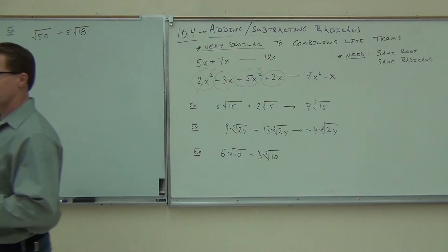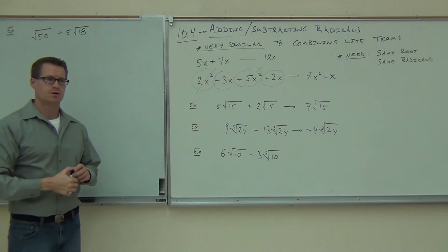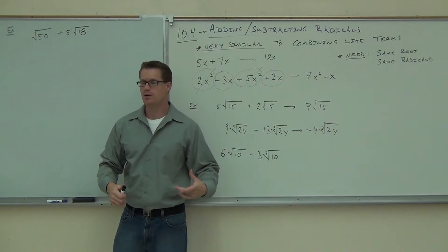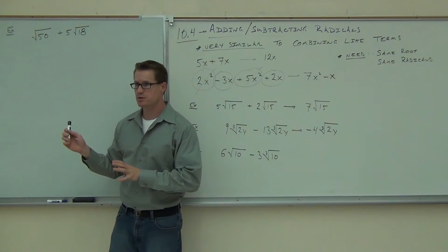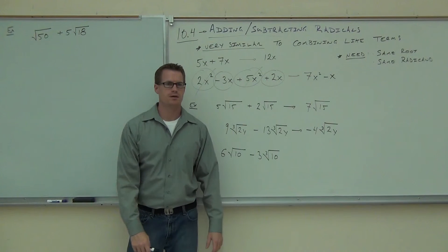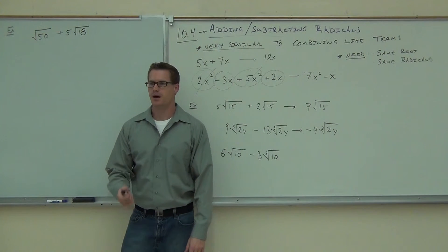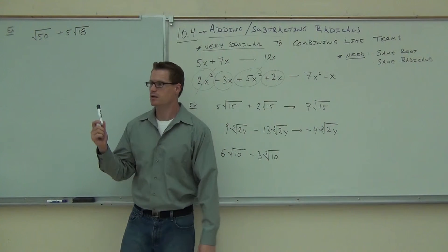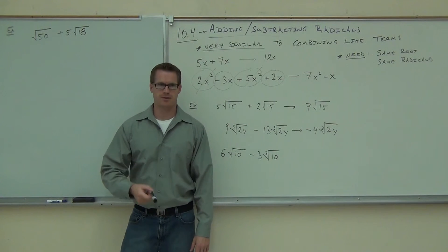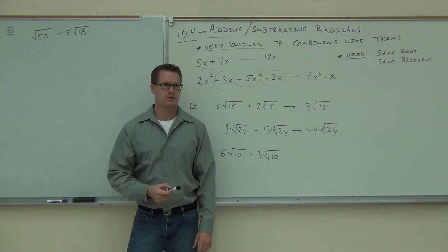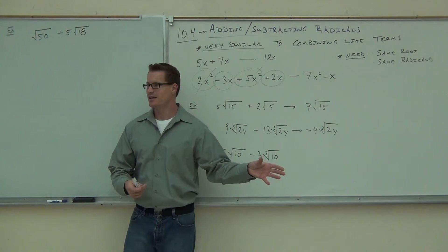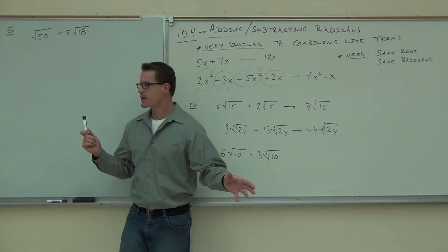Let's look at that one. Do I have the same type of root? Yes. Do we have the same radicand? No. Am I going to be able to add those? Not right now. However, look at the square root of 50 and the square root of 18 carefully. Can you simplify those? Yes — we just finished that section. So before you say yes or no whether you can add those, you better simplify them to make sure they're in simplest form.